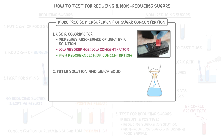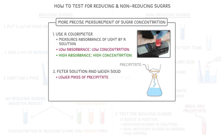Alternatively, you can filter the solution and weigh the solid that's left over after filtering, which we call the precipitate. A lower mass of precipitate indicates less sugar, and a higher mass of precipitate indicates more sugar.